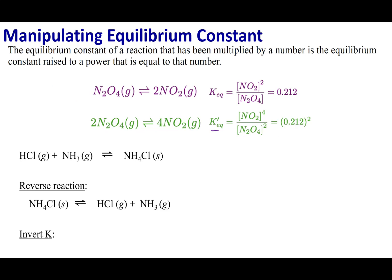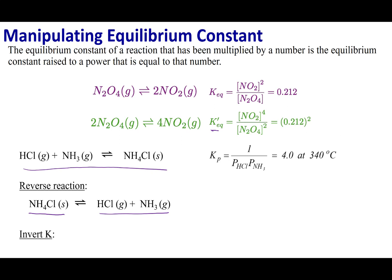Now let's look at this equation: HCl plus NH3 goes to NH4Cl solid. I can write this reaction in the reversed order: NH4Cl going to HCl and ammonia gas. Let's write equilibrium constants for each one of these reactions. For the first one, writing Kp — products over reactants raised to their stoichiometric coefficients — since NH4Cl is a solid, the numerator is just one, and the denominator is the pressure of HCl times the pressure of NH3. Let's say that this Kp is 4 at 340 degrees Celsius.